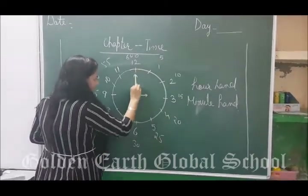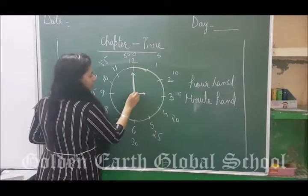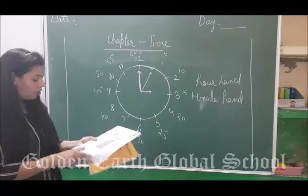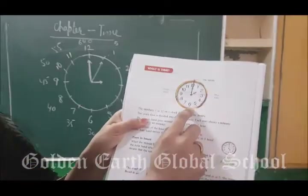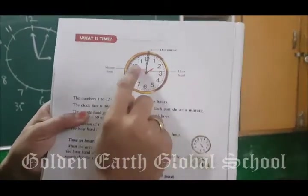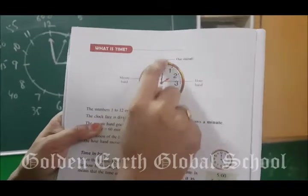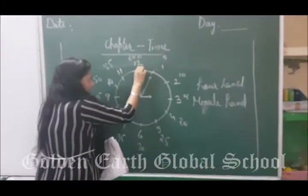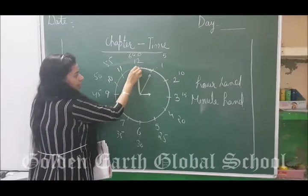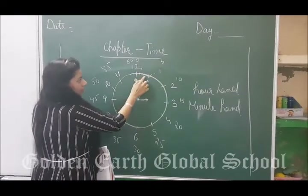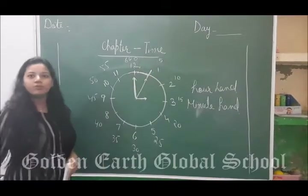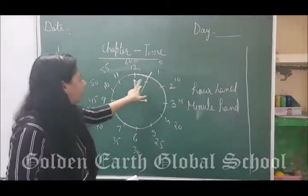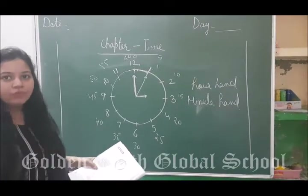When the big hand moves from one number to the next, how many minutes will that be? 5 minutes. How many minutes to the next? 10 minutes. See here — this is the clock. The small hand is the hour hand and the big one is the minute hand. This starts from 12. There are small divisions between each number — each small division is 1 minute, 2 minutes, 3 minutes, 4 minutes. Each big gap between numbers is 5 minutes. So if the minute hand points to 1, that is 5 minutes.